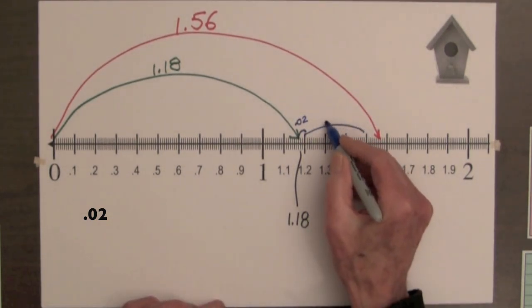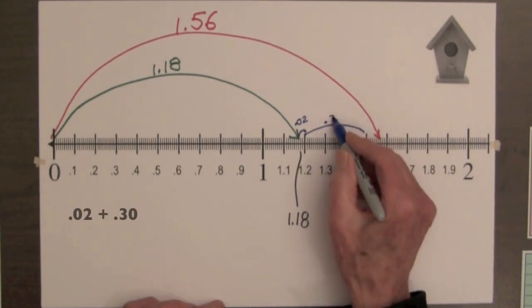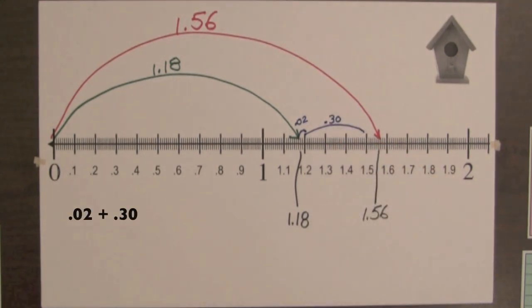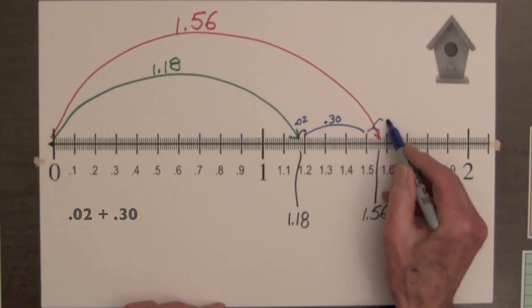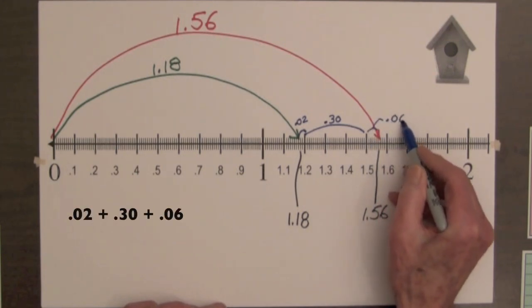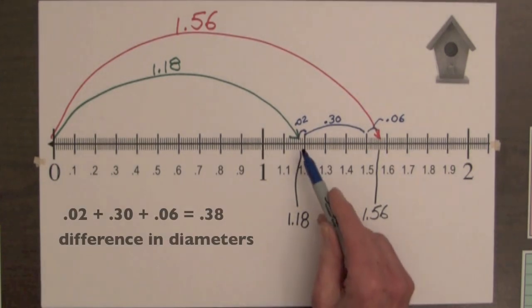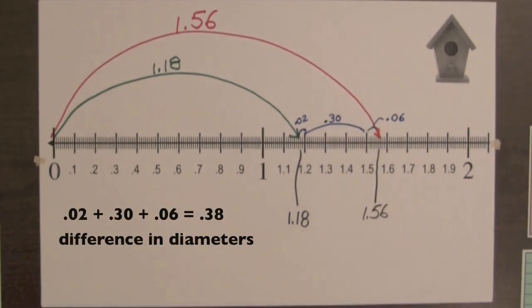From 1.2 to 1.5, it's 3 tenths or 30 hundredths. And from 1.5 to 1.56, it's 6 hundredths. So the total difference is 38 hundredths.